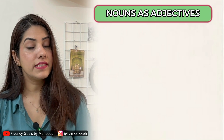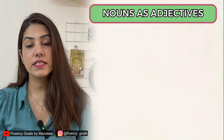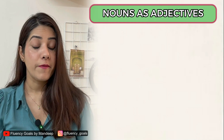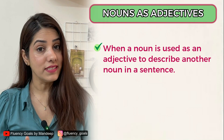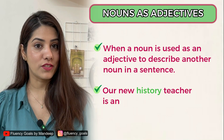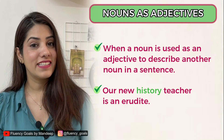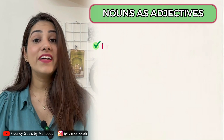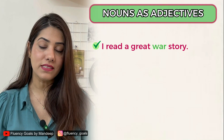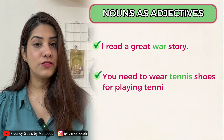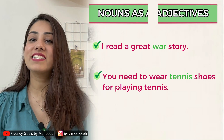Moving on to nouns as adjectives. A noun is a naming word, but when a noun is used to describe another noun, it functions as a noun used as an adjective. Examples: 'Our new history teacher is an erudite' — 'history' is a noun describing another noun 'teacher'. 'I read a great war story' — 'war' is a noun describing 'story'. 'You need to wear tennis shoes for playing tennis' — 'tennis' is a noun describing 'shoes'.